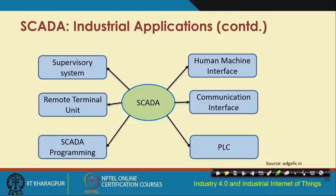SCADA has different components: there is a supervisory system, a human-machine system, a remote terminal unit component, a communication interface system, SCADA programming, and the PLC that I talked about before - the rough sketch of the architecture of which I have shown you, along with the PLC cycle which continues to operate. The tasks are continuously done in the cycle as this PLC machine keeps on operating.